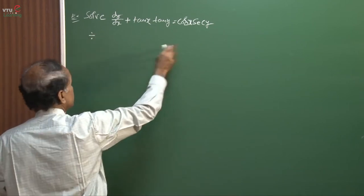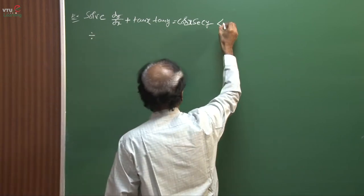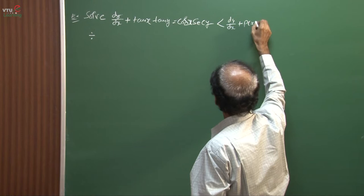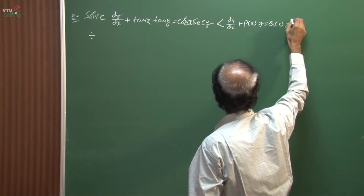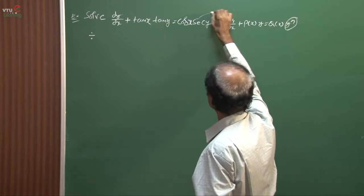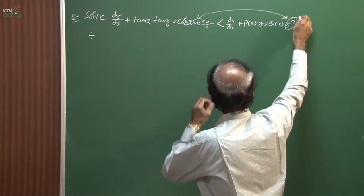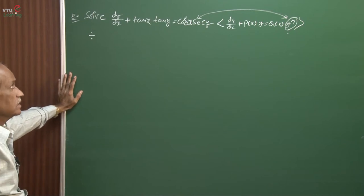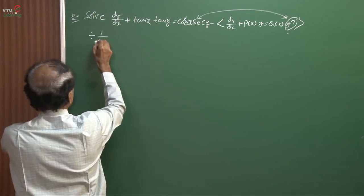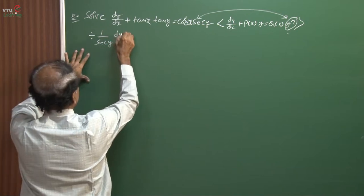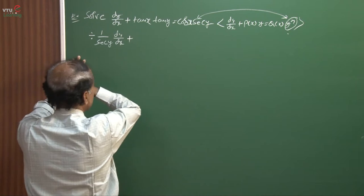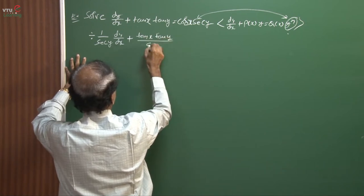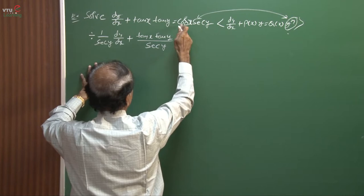First, I will divide by sec(y), because the standard form is dy/dx + P(x)·y = Q(x)·y^n, and here y^n corresponds to sec(y). Dividing through by sec(y): (1/sec(y))·dy/dx + tan(x)·tan(y)/sec(y) = cos(x). After this step, the left side terms involve trigonometric functions of y, so this is not a linear differential equation — it falls under Bernoulli's differential equation.